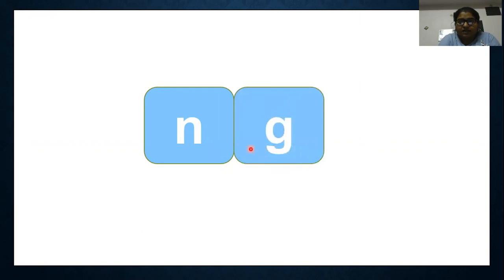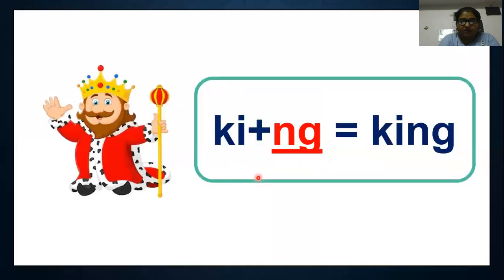You know the sound of n, right? The sound of n is n. And the sound of g is g. But when we have these two letters together, we get the sound ng. What sound we get? ng. So let's practice some words with this sound.